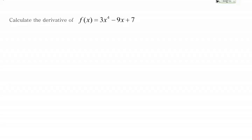Let's use the derivative rules we've learned so far to calculate the derivative of this polynomial. F of X equals 3X to the fourth minus 9X plus 7.